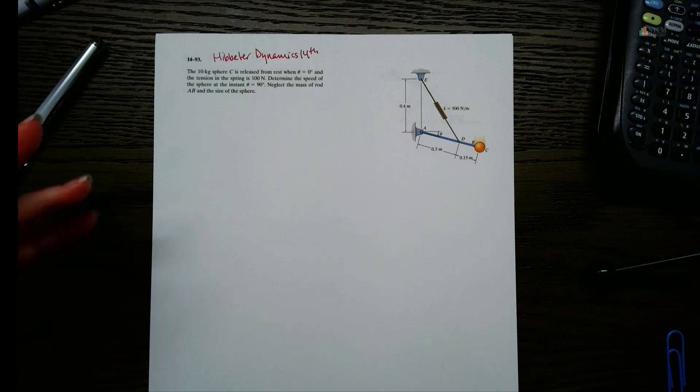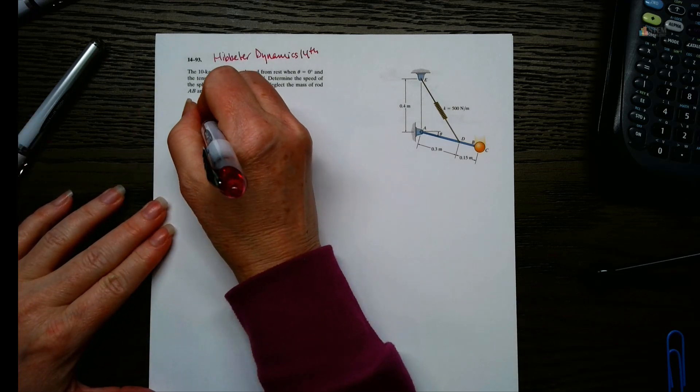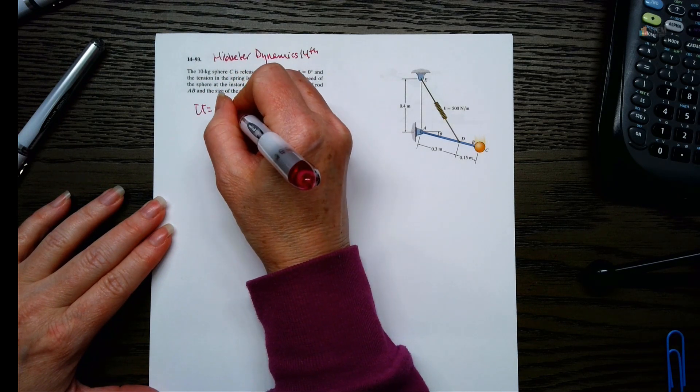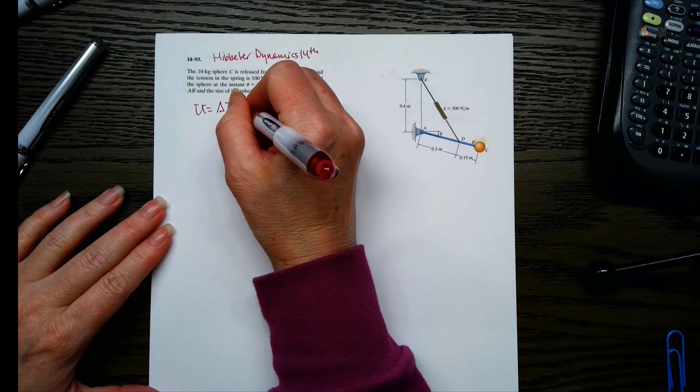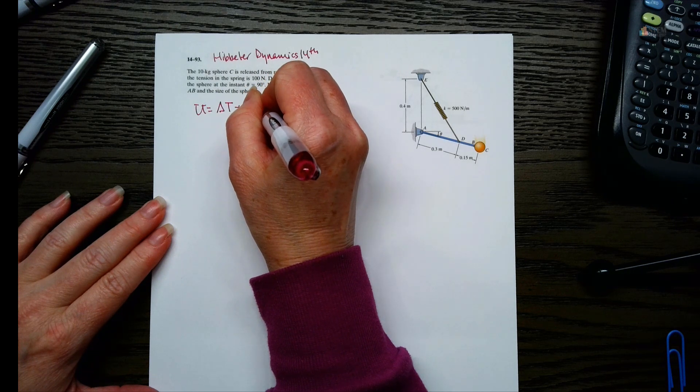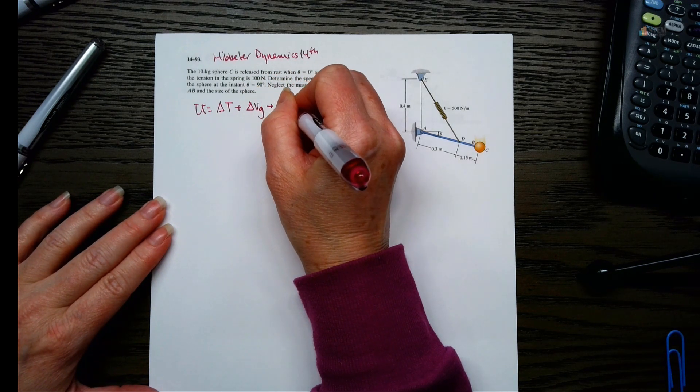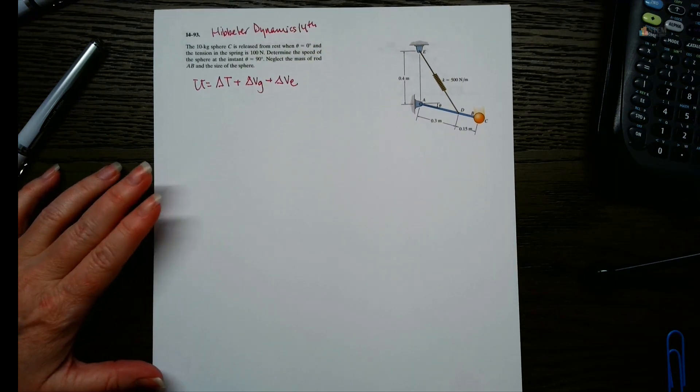We're going to use the work energy equation to solve this one. So U is work, and then we're going to have that equal to delta T, which is kinetic energy, plus delta VG, that's our gravitational potential energy term, and then delta VE is our elastic potential term.